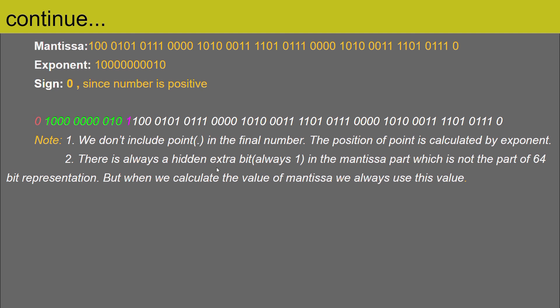There is always a hidden extra bit — always 1 — in the mantissa part that is not part of the 64-bit representation, but is always used when calculating the mantissa value. We have covered pretty much everything about the 64-bit representation. If you have any questions, please let me know and I will be happy to answer. Thank you for listening — see you in the next session, have a great day.